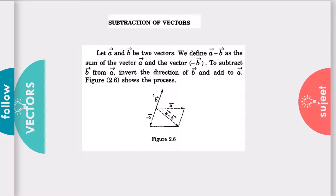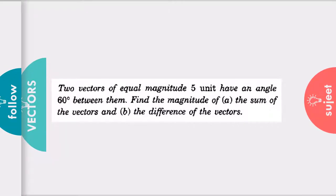Now I would like to share one question with you. Please try to solve this on your own. I am describing it: two vectors of equal magnitude five units have an angle 60 degrees between them. What do we need to find? The magnitude, first sum of the vectors means the resultant of the summation, and second, the difference of the vectors. You need to find the magnitude, but you can also find the angle on your own. If you will have any kind of problem, in the next series I will give you the solution for this.